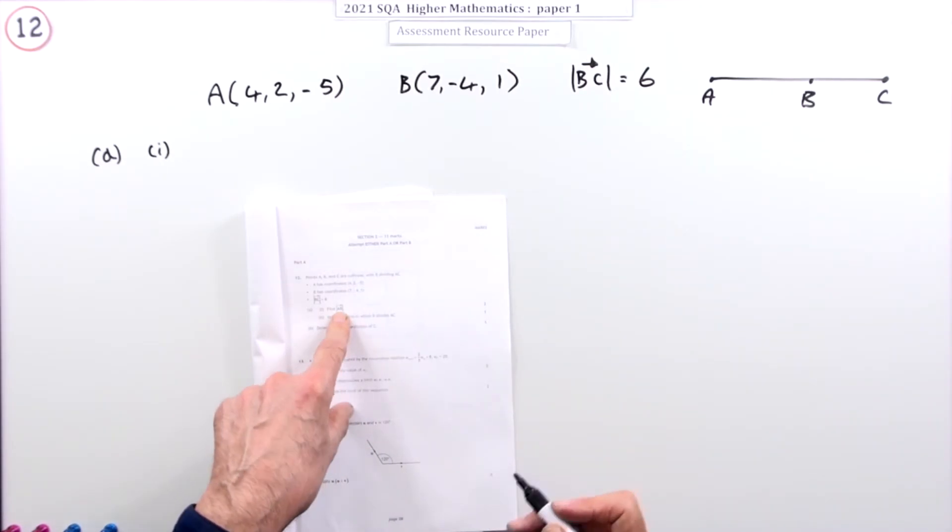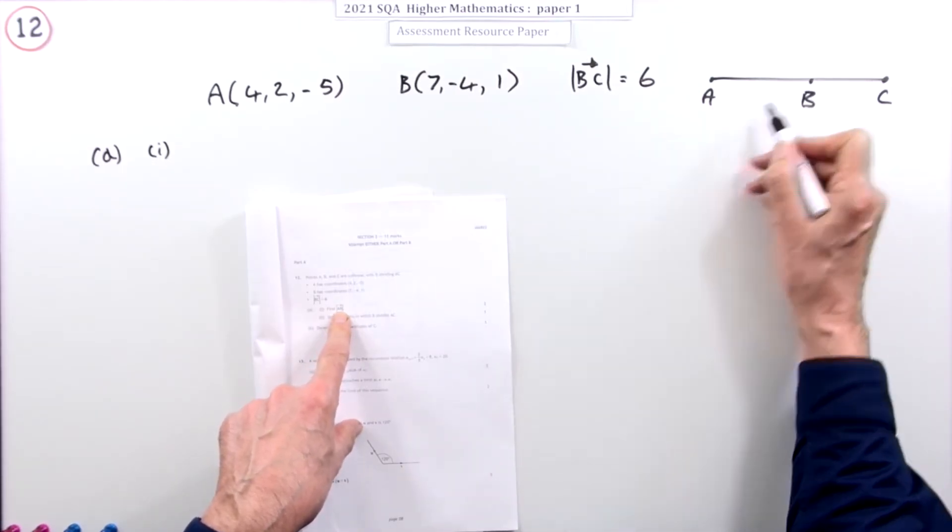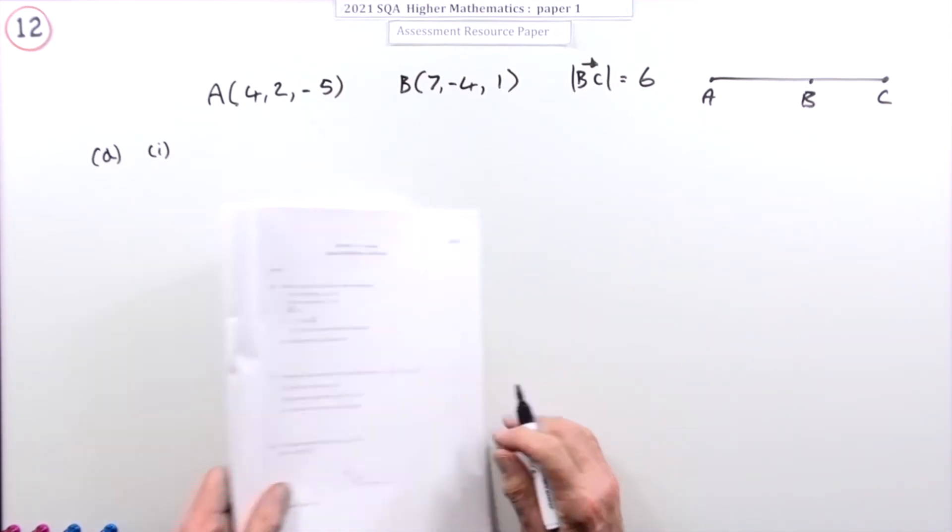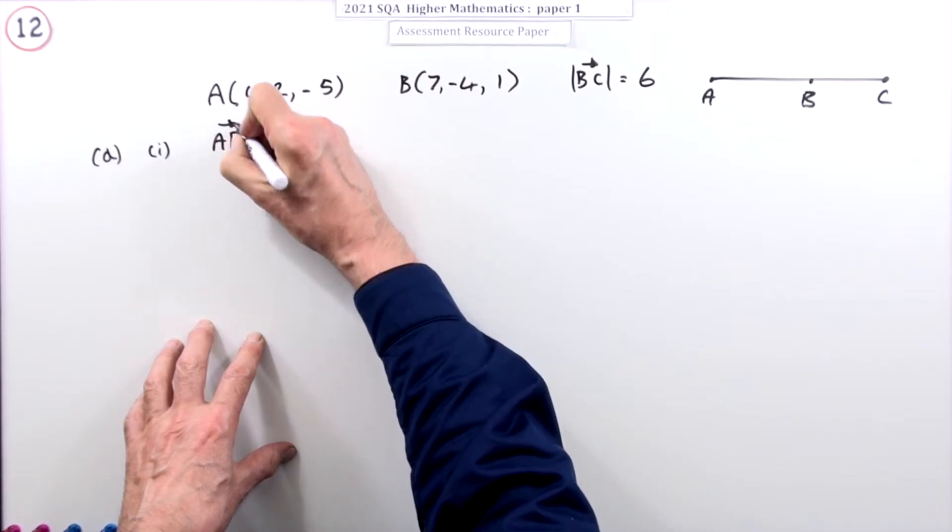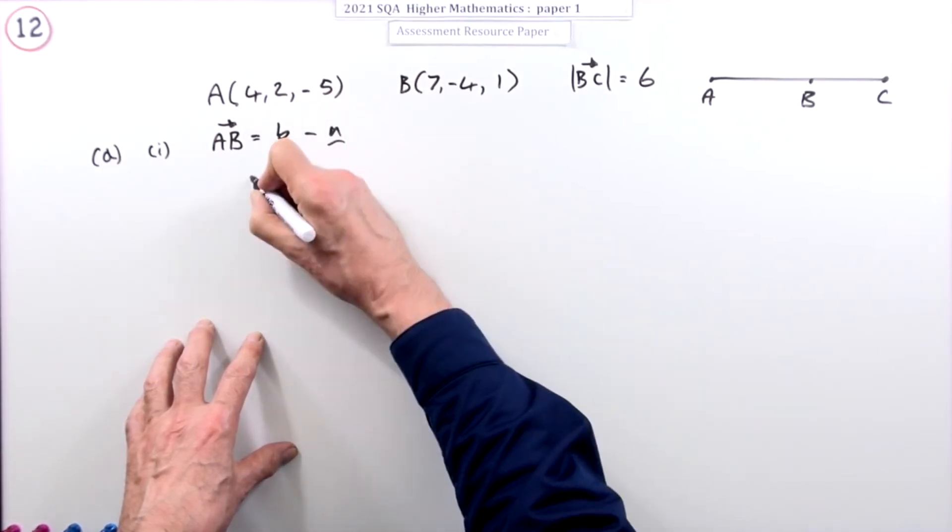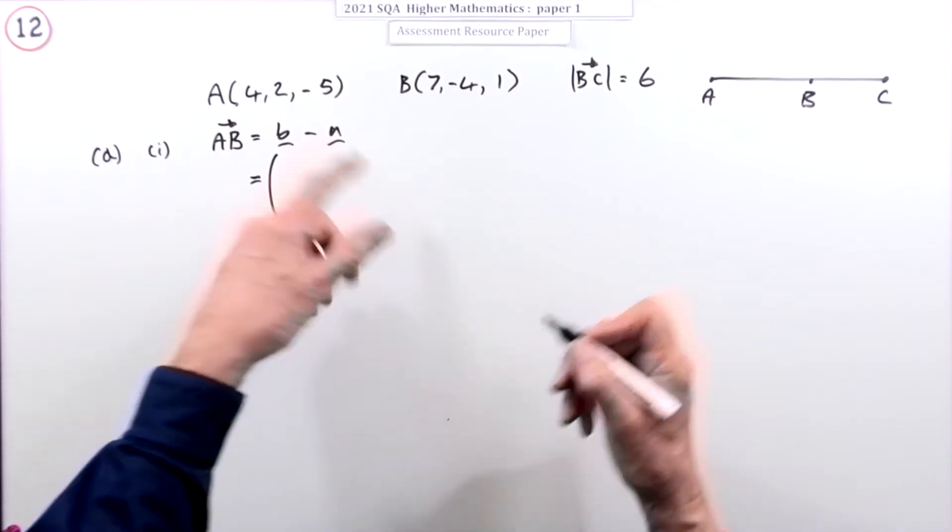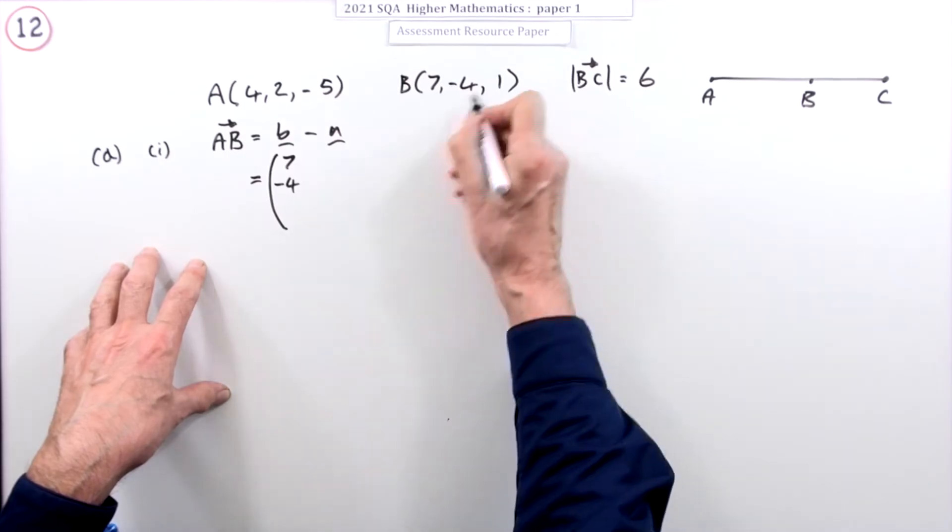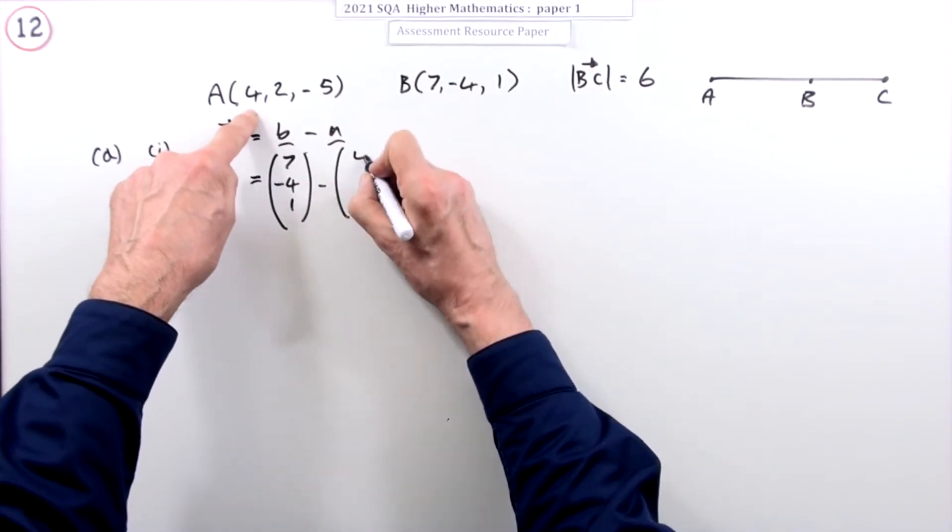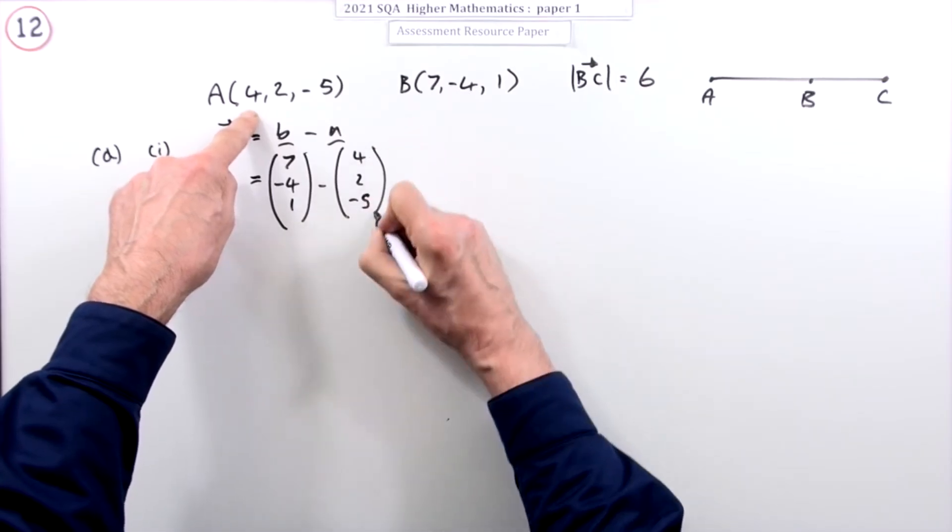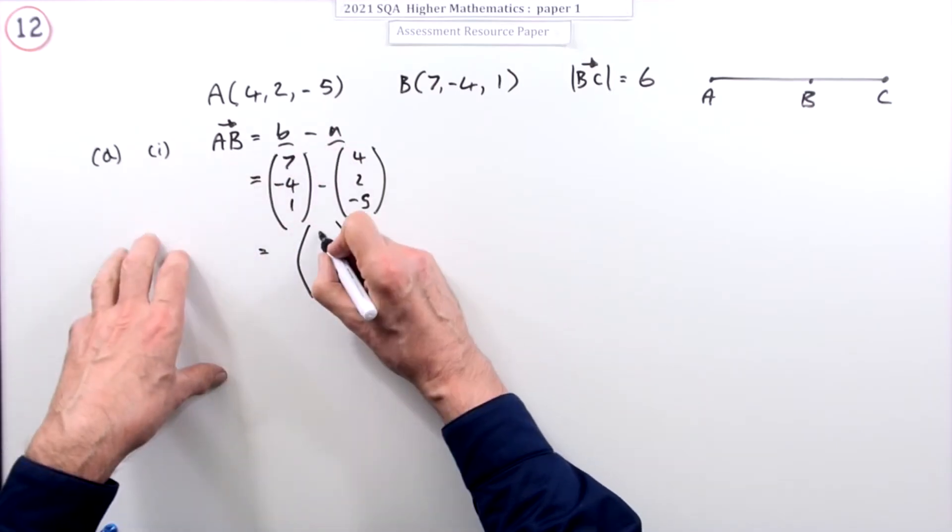What's the first bit? Find the magnitude of the displacement AB, of the vector AB, the displacement AB. Right, well AB, how do you go from A to B? Well that'll be B minus A, where you end up take away where you started. 7, negative 4, 1, writing them down as column vectors, and A is 4, 2, negative 5.